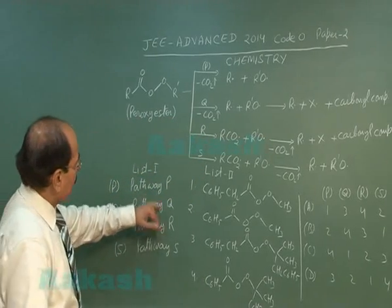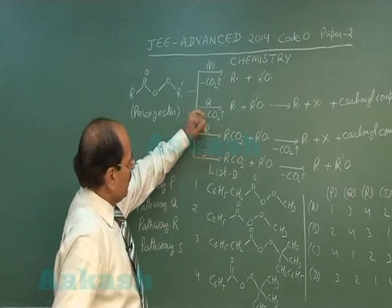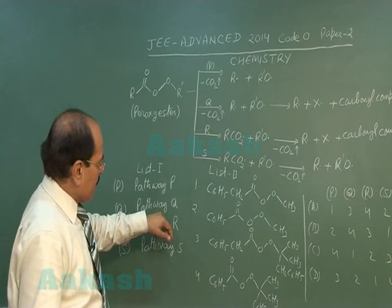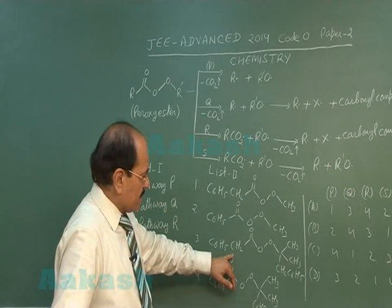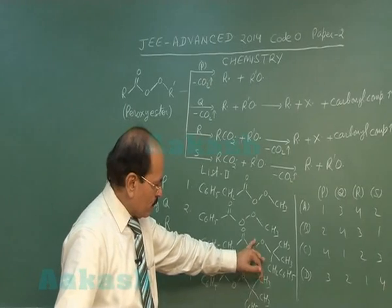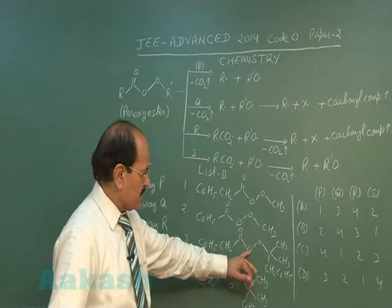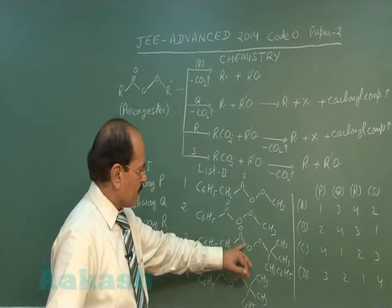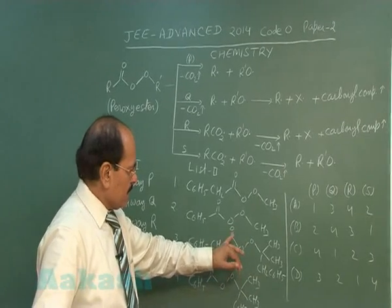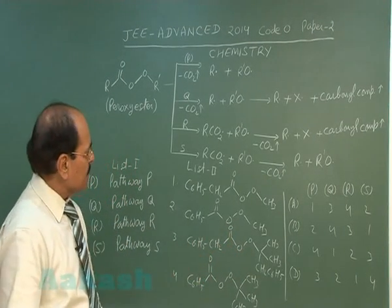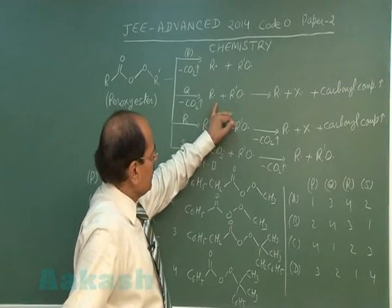For pathway Q, the O-O bond undergoes cleavage, giving rise to a carboxyl radical. The carboxyl radical loses carbon dioxide, giving rise to a benzyl radical. That is what we are seeing here.